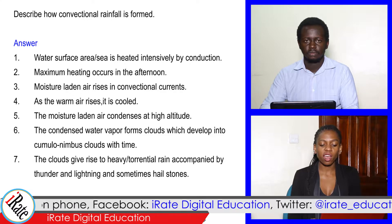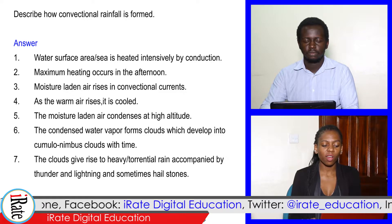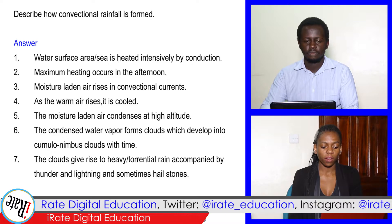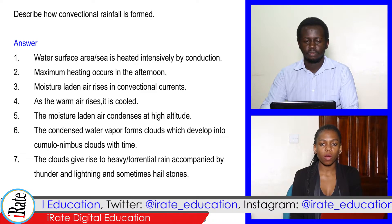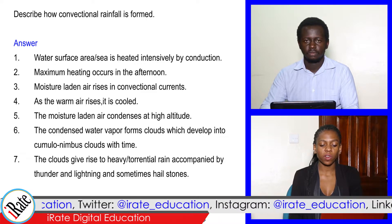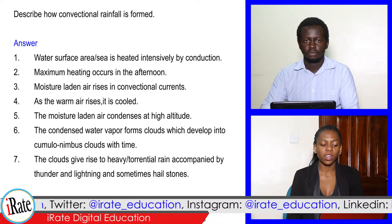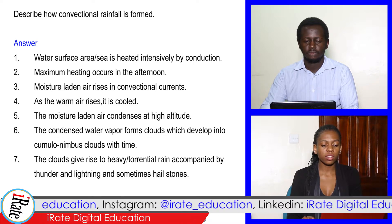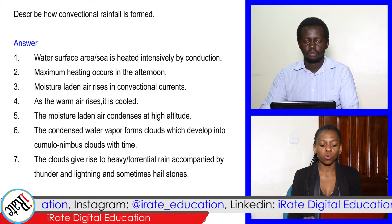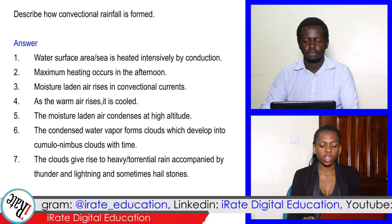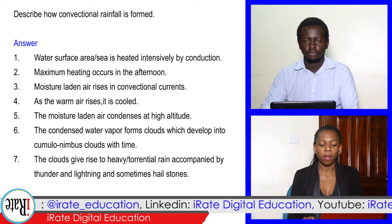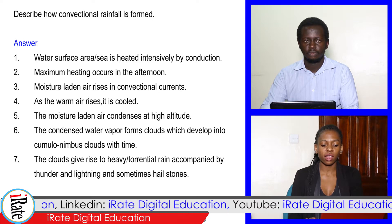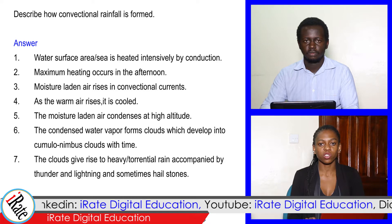The moisture-laden air condenses at high altitude. The condensed water vapor forms clouds which develop into cumulonimbus clouds with time. The clouds give rise to heavy or torrential rain accompanied by thunder and lightning, and sometimes hailstones.